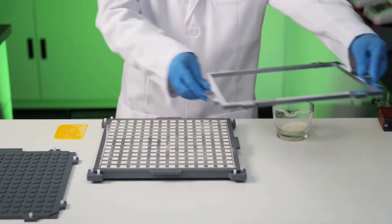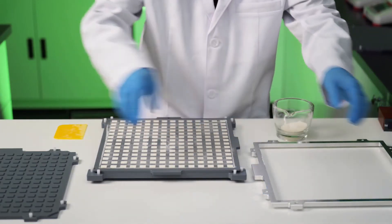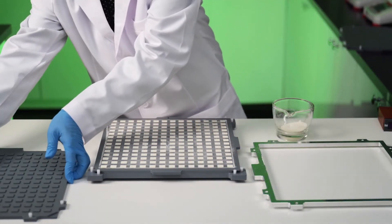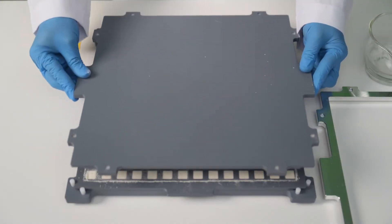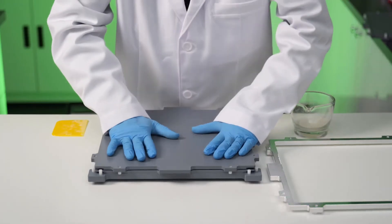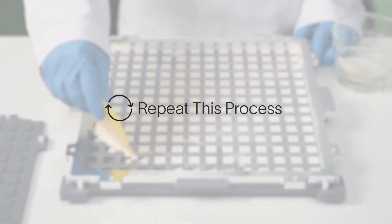Once the cavities cannot be filled any further, it's time to tamp the powder. Simply align the tamper over the cavity plate and press firmly down, condensing the powder into the mold. Repeat this process of spreading and tamping the powder until the cavities are full.